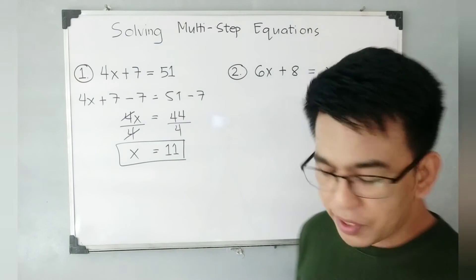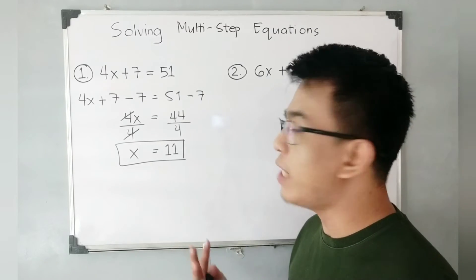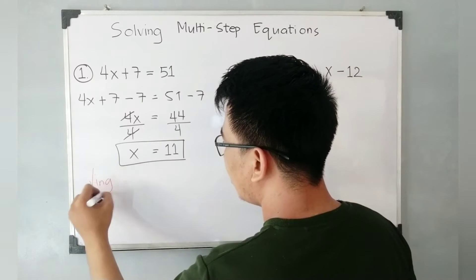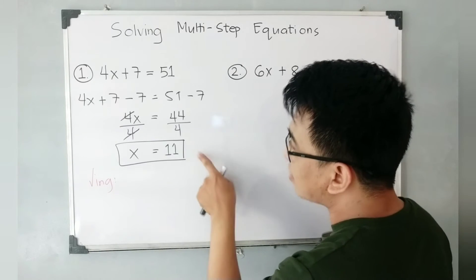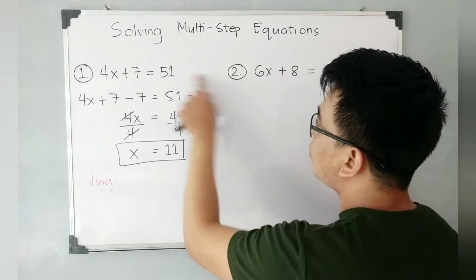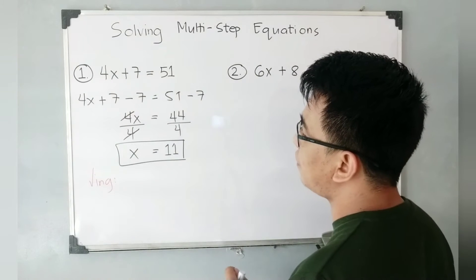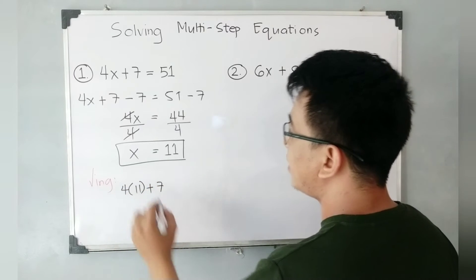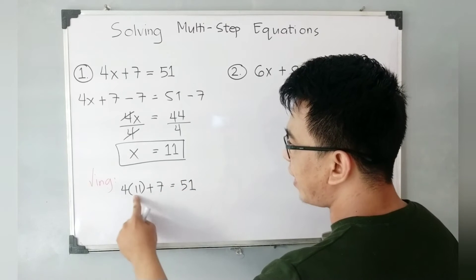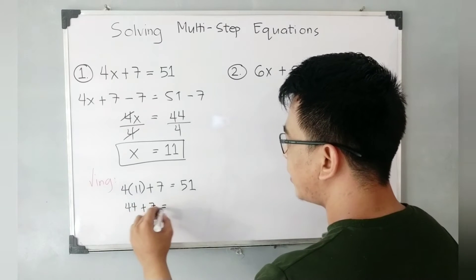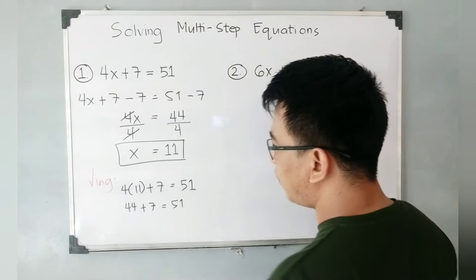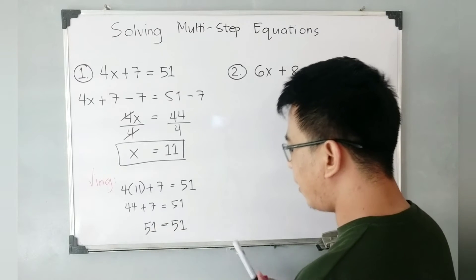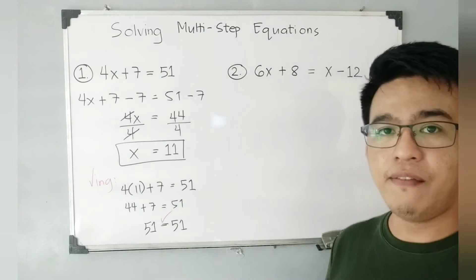Now I will give you another extra way to check whether your answer is correct. You can do checking by substituting the variable x back into the original equation. So you have 4x plus 7 is equal to 51. We replace x with 11: that is 4 times 11 plus 7 is equal to 51. Simplifying, 44 plus 7 is equal to 51, and 51 is equal to 51. They are equal. Therefore, x equals 11 is correct.